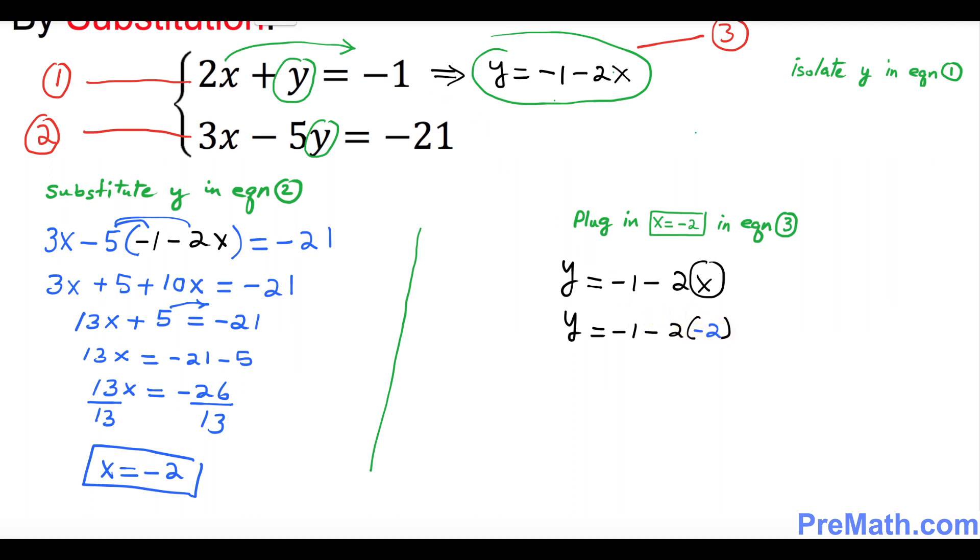Let's simplify this. y equals negative 1 plus positive 4, so y turns out to be positive 3.